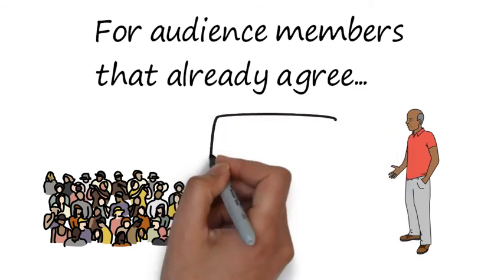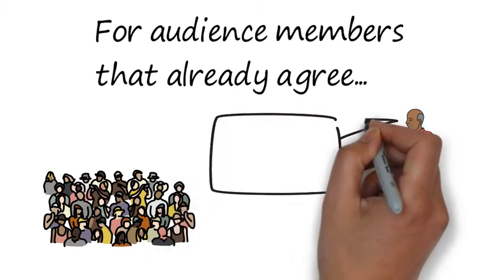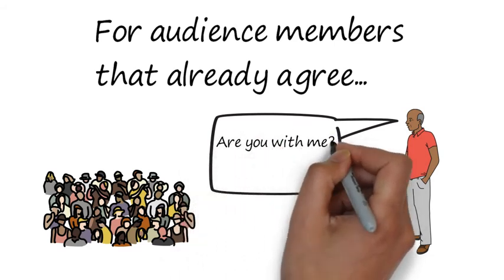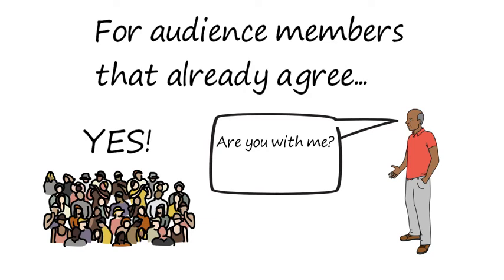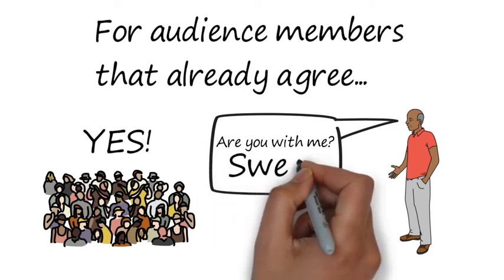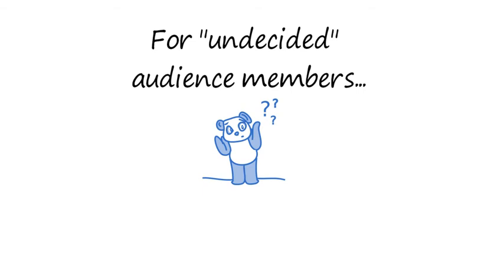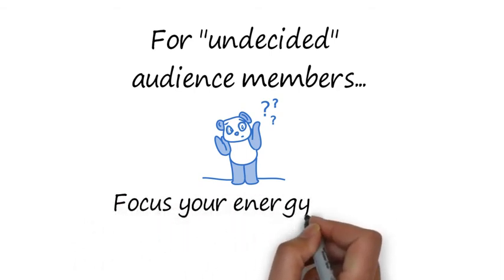With those who already agree, your goal is to intensify and solidify their attitude. Notice that you're not necessarily creating change in this particular audience member, but you still could influence their attitude with your message. Second is the audience member that is neutral or undecided — this is where you want most of your audience to fall. You really want to focus your energy on the undecided audience members.